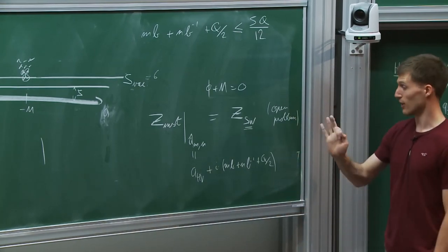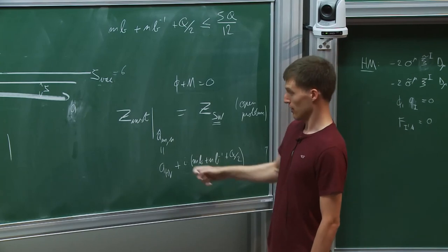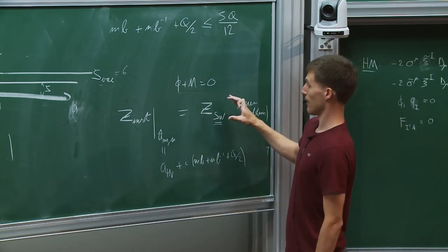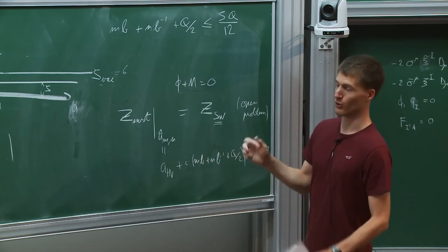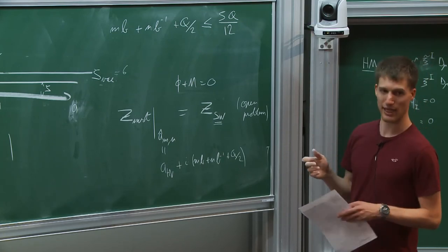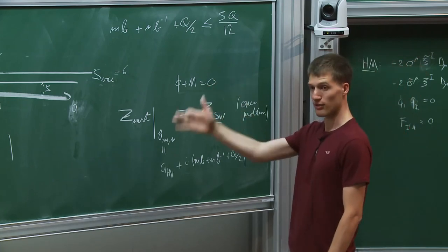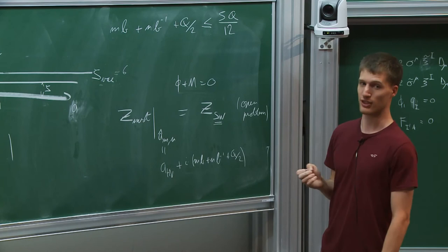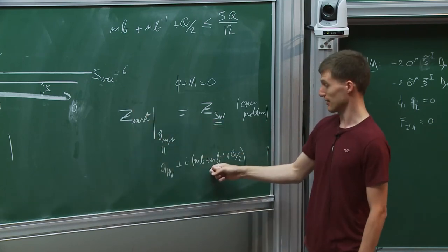There are two limits where it is easy to check: when m equals zero or n equals zero. You can evaluate the instanton partition function at this particular value and find precisely the vortex partition function of the vortex theory described by that winding number. So the vortex moves in its moduli space inside this R^2, and the world volume theory of these vortices — which also possesses vortices — is captured by this object. More generally the claim is that you find the non-perturbative Seiberg-Witten partition function.